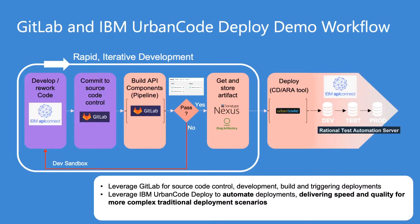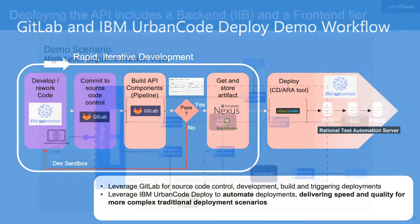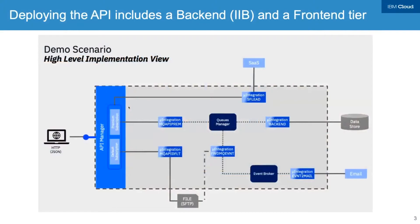While GitLab Ultimate provides deployment capabilities, many of our clients combine it with Urban Code to coordinate across tiers and leverage pre-built integrations with various middleware. In this demo, we'll be deploying to IBM API Connect and IBM WebSphere Liberty.